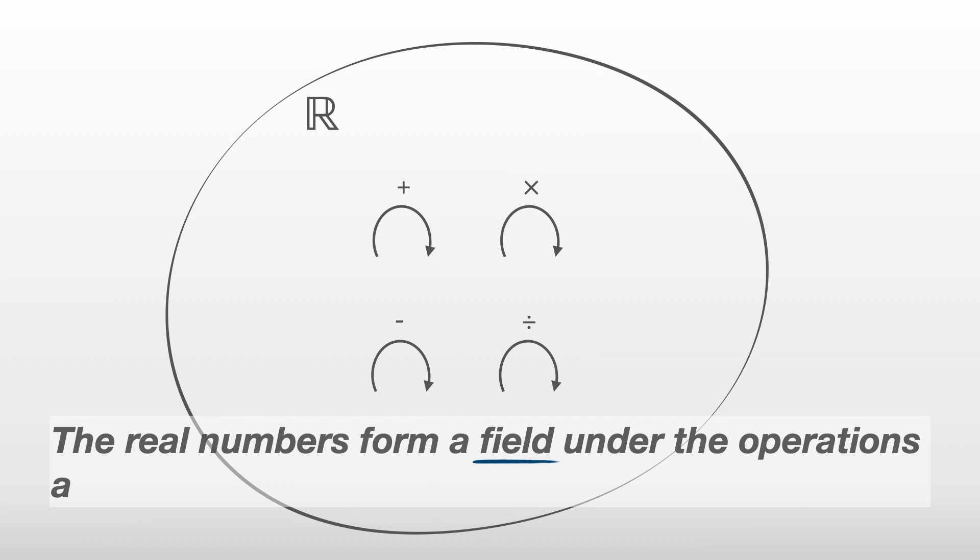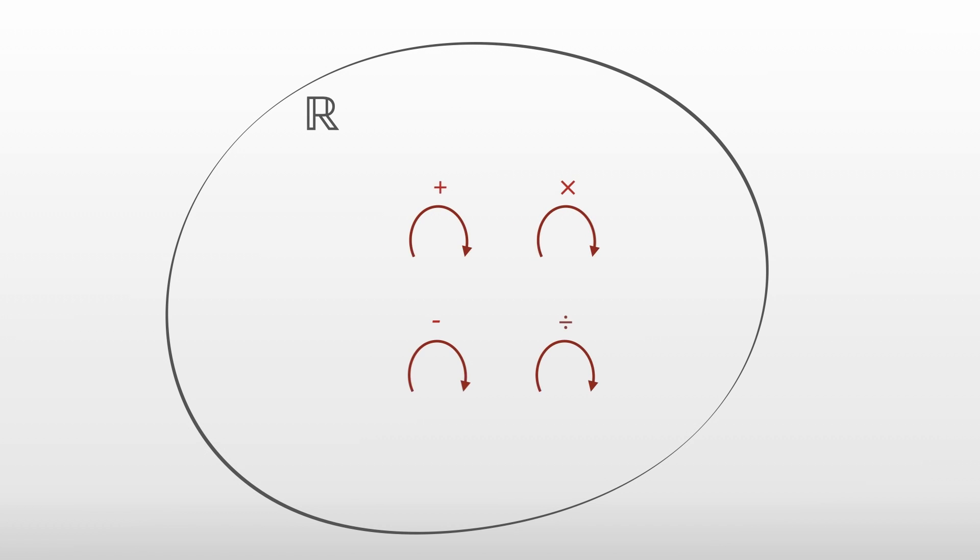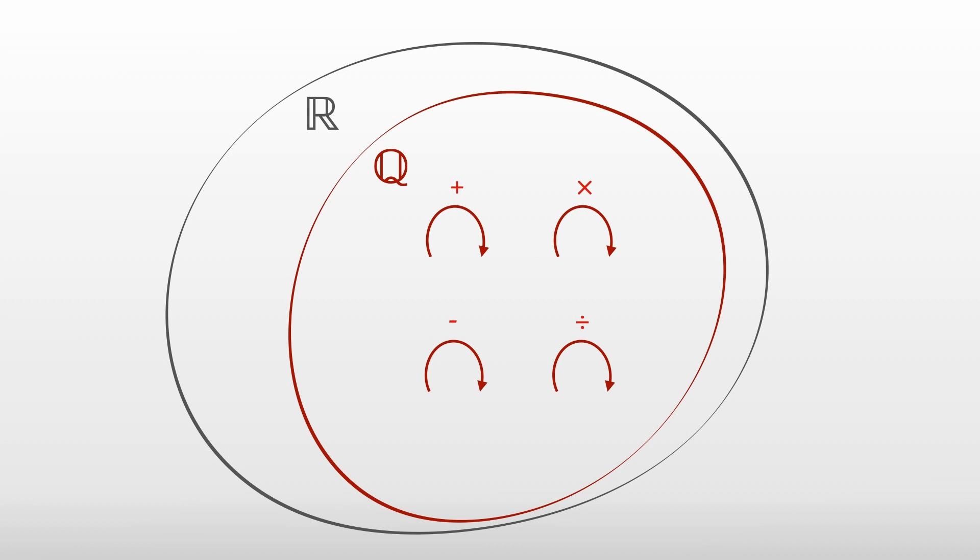We say the real numbers form a field under the operations addition and multiplication. The subtract and divide operations are not explicitly mentioned because technically they're the inverse of addition and multiplication. And the same is true for all rational numbers which also form a field with respect to addition and multiplication.